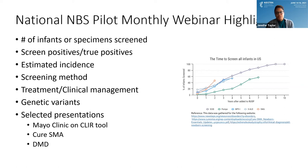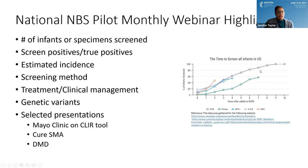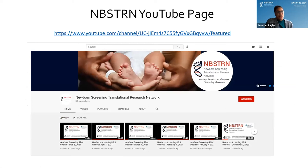The purpose of these calls is for the newborn screening community and state programs to learn about conditions as they're being implemented. Historically, as shown by SCID, it took about 10 years for all states to start screening. The calls help track where states are with conditions like Pompe, MPS1, and XALD, and what the challenges are. If you miss a call, you can catch it on the NBSTRN YouTube channel, posted approximately one week after the meeting.